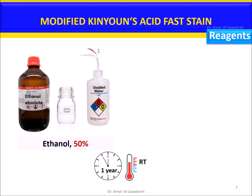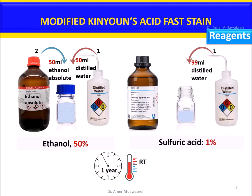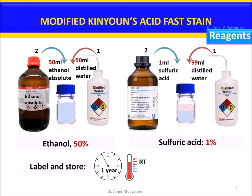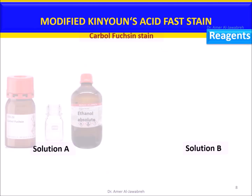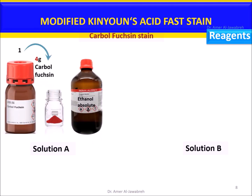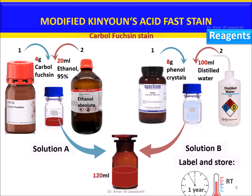Reagent preparation: Prepare 50% ethanol as shown. Prepare 1% sulfuric acid as shown. Label and store for one year at room temperature. For carbol fuchsin stain, prepare solution A and solution B as shown, then mix the two solutions. Label and store at room temperature for one year.